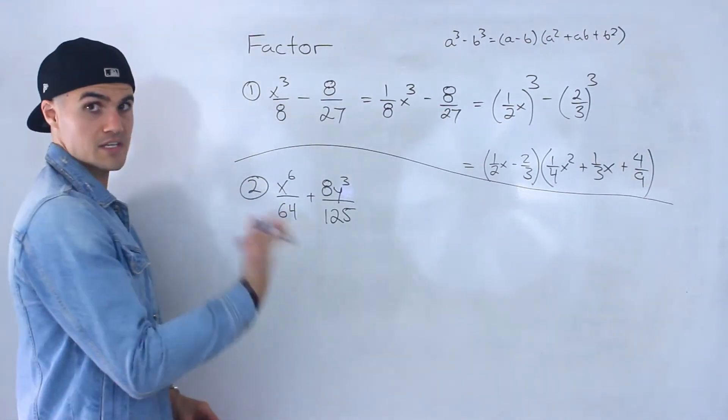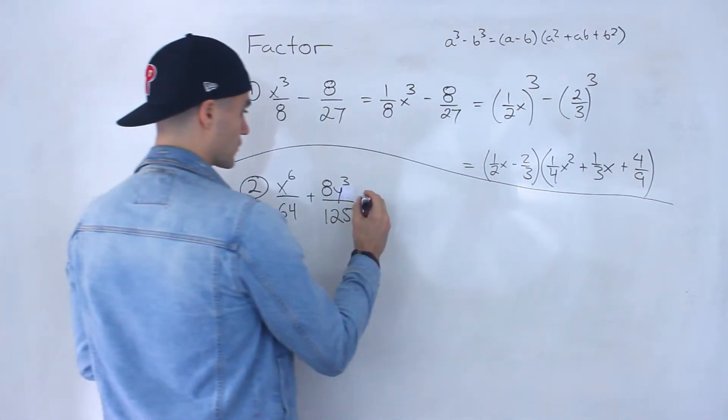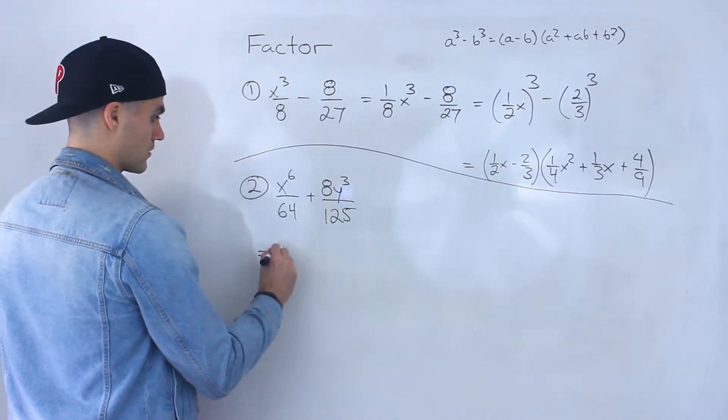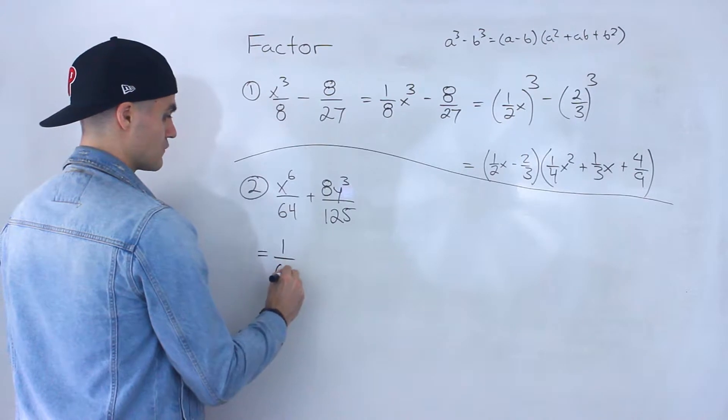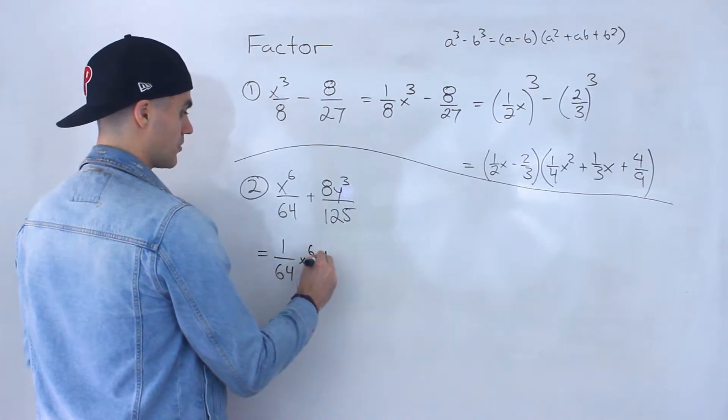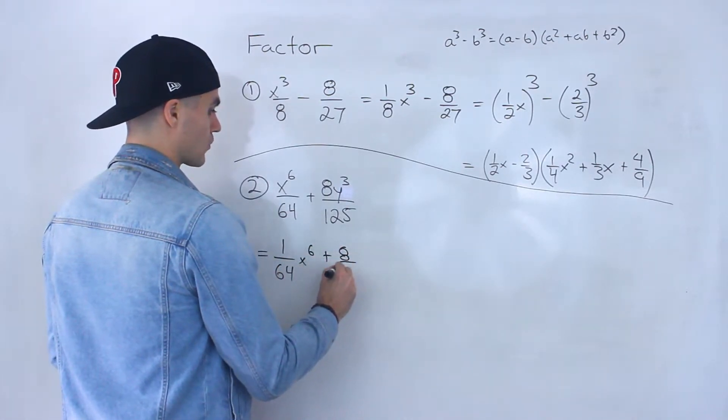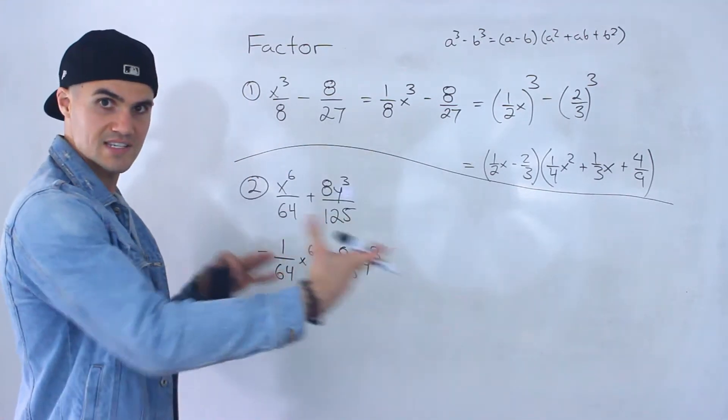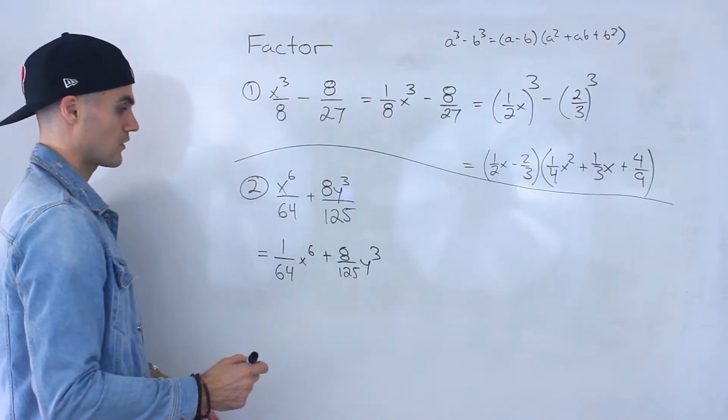Now here, we're going to have a sum of cubes. And what I'm going to do is I'm first going to take this and I'll rewrite it here. I'm going to rewrite this as 1 over 64 x to the 6 plus 8 over 125 y to the 3. So same thing like I did here. Separate the coefficient and the variable.